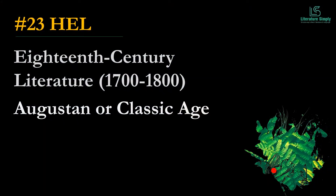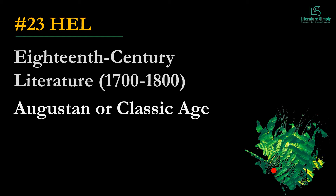Here we have video 23 on the history of English literature. We are going to cover 18th century literature, also known as the Augustan Age or Classic Age. We will discuss why this age is known as the Augustan Age or Classic Age, and why some scholars object to the term 'Classic' or 'Classical Age.'